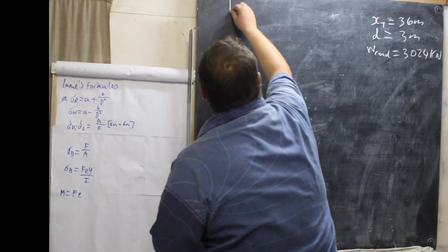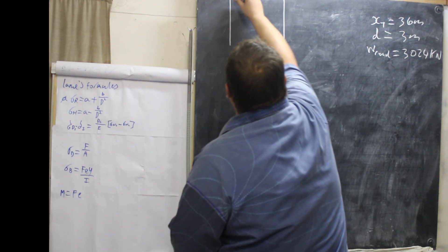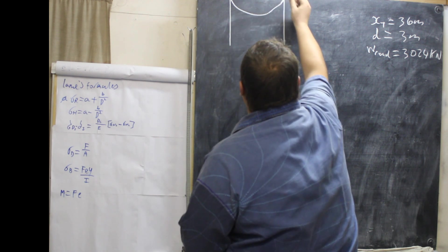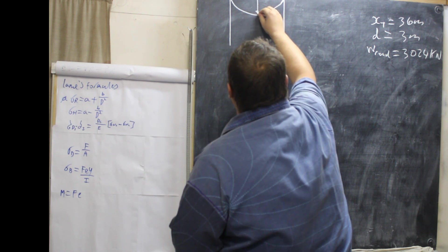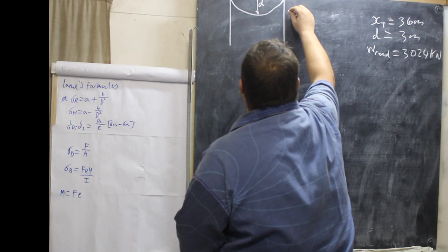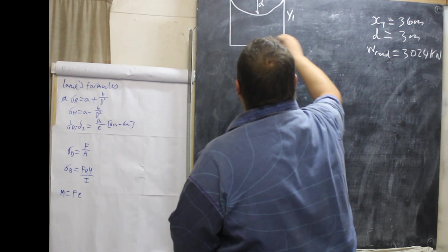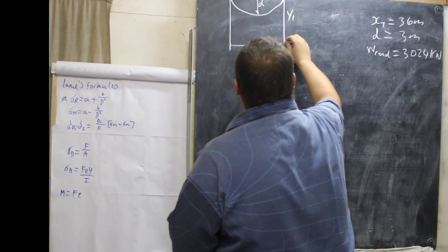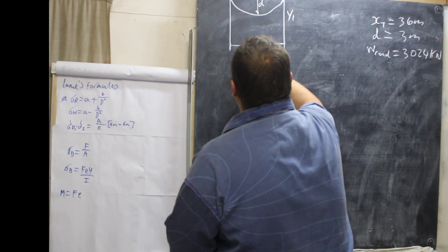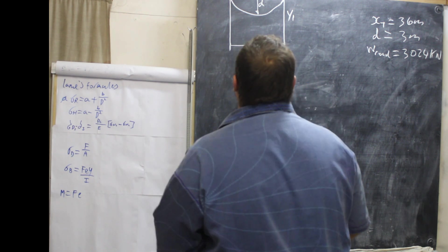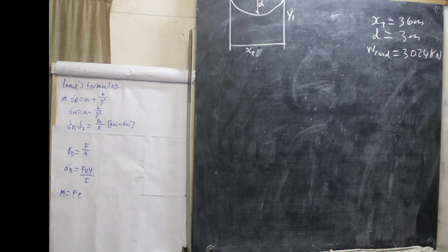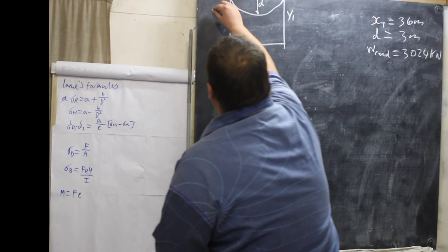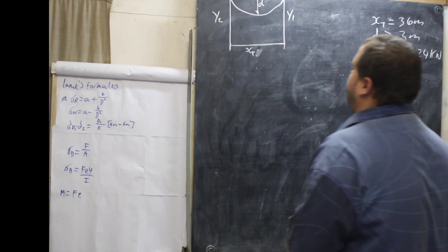Here is a basic picture for the cable — from there to there. There is D, Y1, and X total. Y1 equals Y2, so they are all equal.